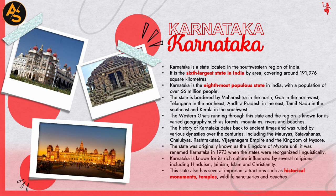The history of Karnataka dates back to ancient times and was ruled by various dynasties including the Mauryas, Satavahanas, Chalukyas, Rashtrakutas, Vijayanagara Empire, and the Kingdom of Mysore. The state was originally known as the Kingdom of Mysore until it was renamed Karnataka in 1973. Karnataka is known for its rich culture influenced by Hinduism, Jainism, Islam, and Christianity, and has several important attractions such as historical monuments, temples, wildlife sanctuaries, and beaches.